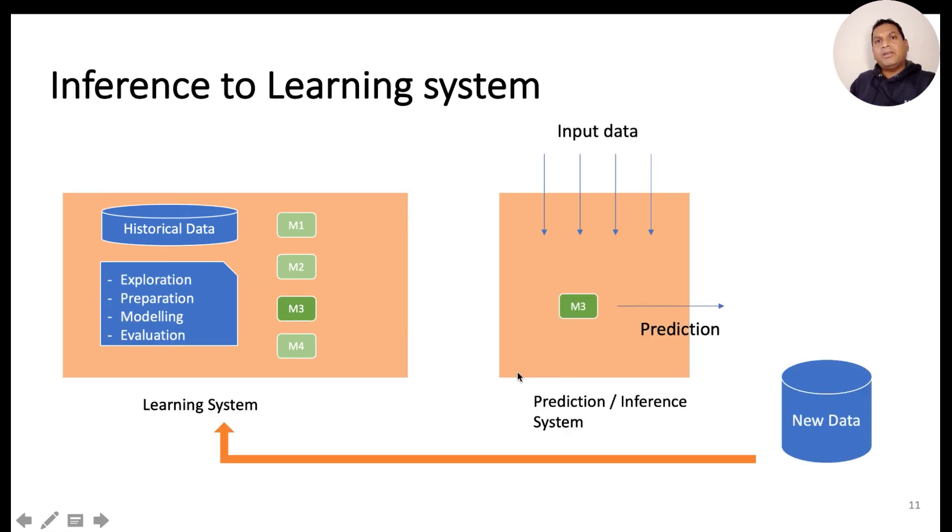Similarly, will there be any flow of information from the inference system to the learning system? The inference system can actually generate new samples and examples which we can leverage later to retrain these models on the learning system which can learn new patterns in the data.